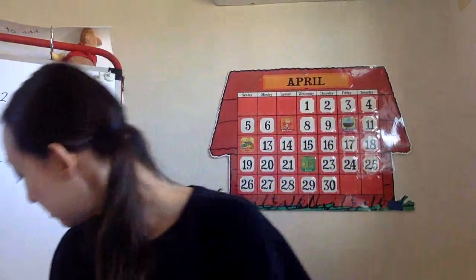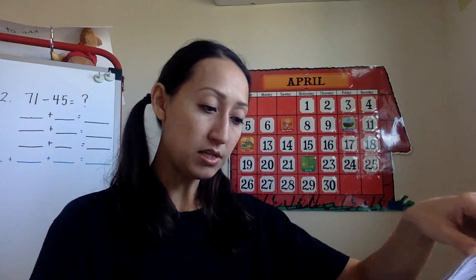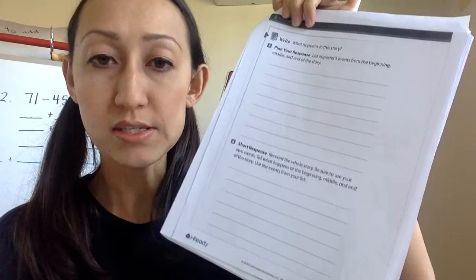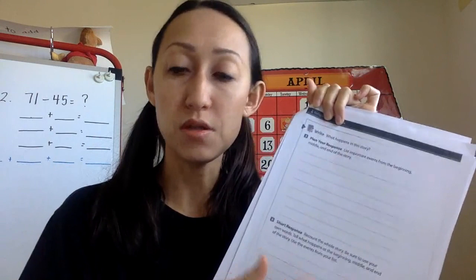Your ELA assignment is to reread the story, the Wolf in Sheep's Clothing, and to answer the constructive response, the retell, on page 27 and 26. You're going to sequence important events and put them in the correct order of the story.